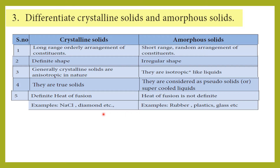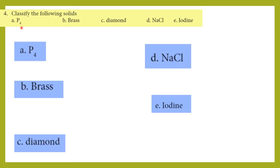Examples: crystalline solids — sodium chloride, diamond. Amorphous solids — rubber, plastic, glass. Next question: classify the following solids. Classification types are ionic solid, molecular solid, covalent solid, and metallic solid.